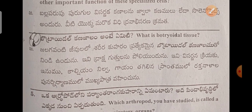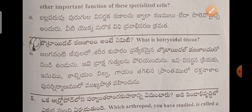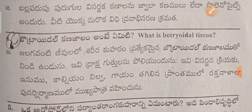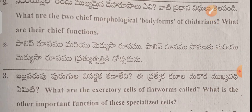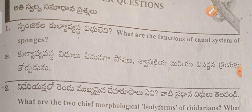Next is Botryoids — this is the fourth question. Botryoids is Jelaga. Jelaga is a type of tissue found in the body. One type of connective tissue in the body is Botryoids, also known as Jelaga.